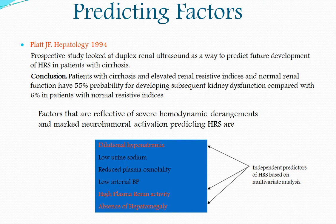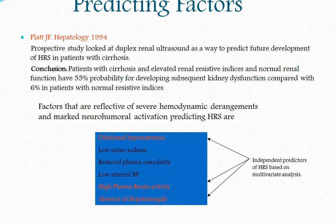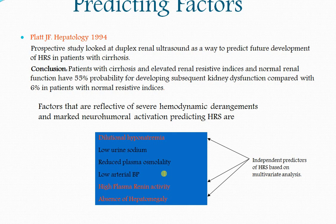Other easier-to-measure predictors of HRS include dilutional hyponatremia, which is an independent predictor based on multivariate analysis. Low sodium, reduced plasma osmolarity, and low arterial blood pressure can also predict HRS. Additional independent predictors are high plasma renin activity and absence of hepatomegaly. Dilutional hyponatremia is the most clinically useful, as it is commonly evident on routine blood work.